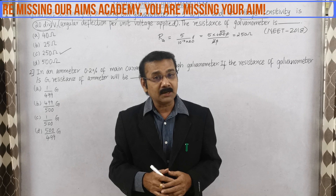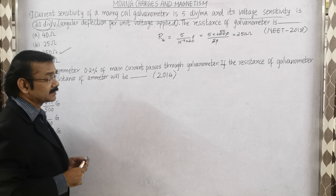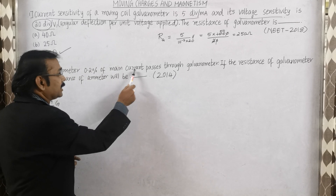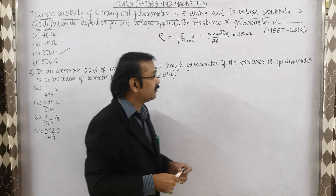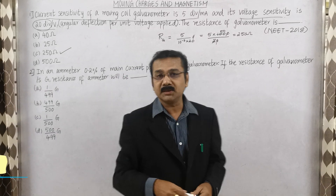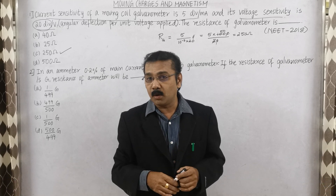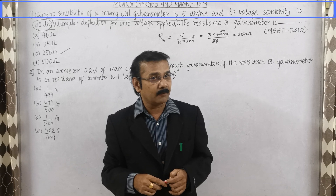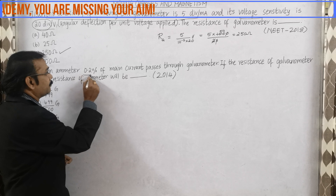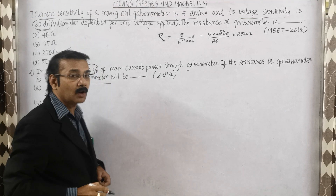Let us go on to the second question now. In the second question, 0.2 percent of the main current passes through the galvanometer. If the resistance of the galvanometer is G, the resistance of the shunt is dash. This question was asked in the year 2014. Again, without using any formula and any concept, we are going to do this in a fraction of seconds. The key given value is the percentage: 0.2 percent.